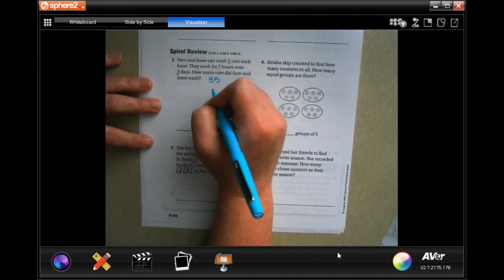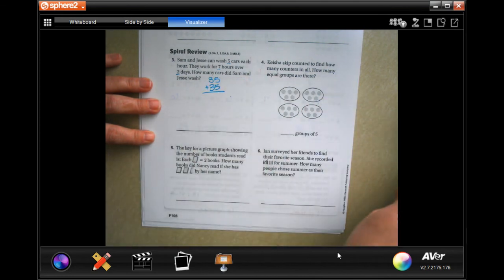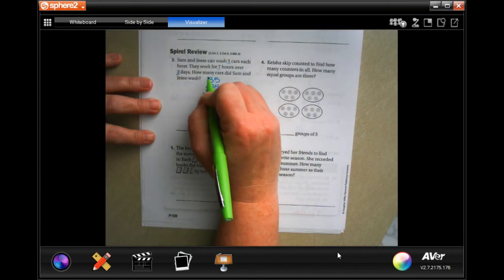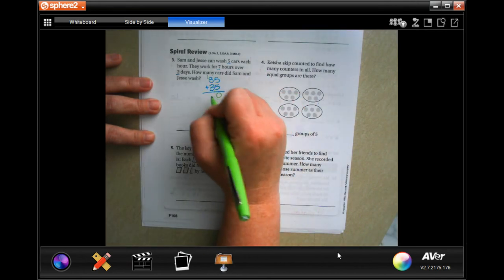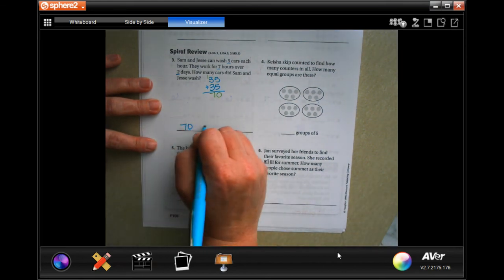So I'm going to do 35, and I can either multiply that by two or I can just add another 35 because it was just two days. So I'm going to go ahead and just add them up. Five plus five is ten, carry that one. Three plus three is six, plus one is seven. That is 70 cars.